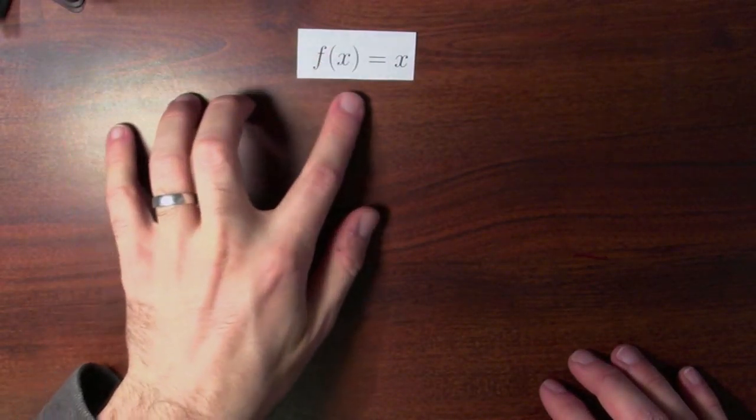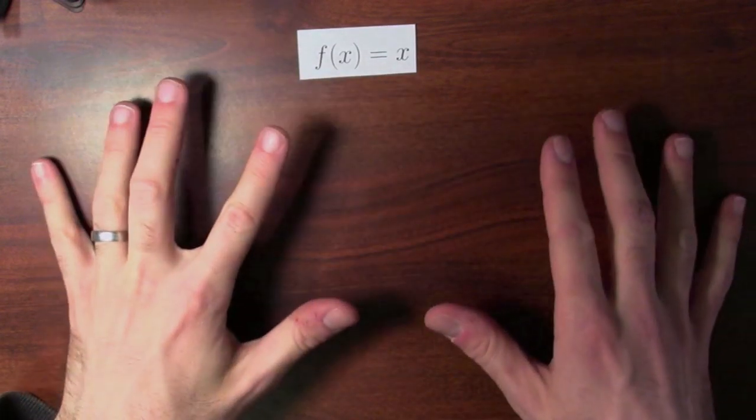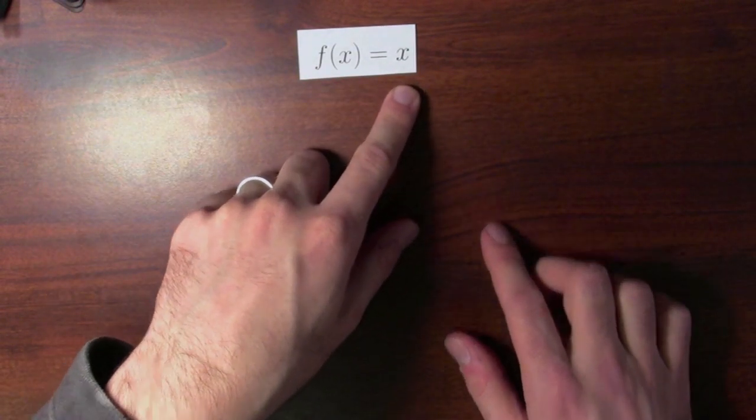Here's the first function in our library: f of x equals x, the identity function. Whatever you plug in, this function outputs that same thing.